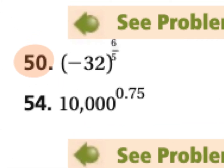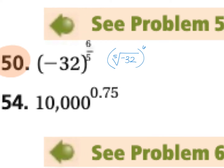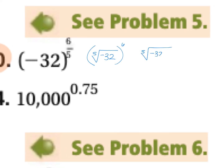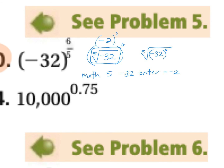Part D: you have negative 32 to the six fifths power. The root is on bottom, so this is the fifth root of negative 32, and then take that whole thing to the sixth power. You can do it the other way, but I'd rather do it this way because I know the fifth root of negative 32. On your calculator: math five, negative 32, enter — you get negative two. So this is negative two to the sixth power. Don't forget those parentheses. Negative two to the sixth is 64, so number 50 equals 64.